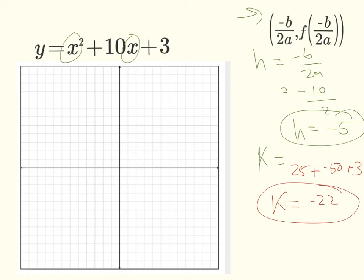All right? So there's our vertex here. Our vertex is located at negative 5, comma, negative 22. All right? So we can plot that point.